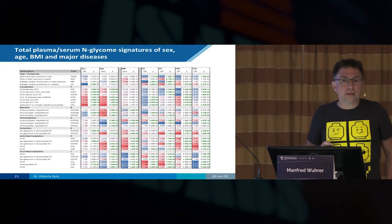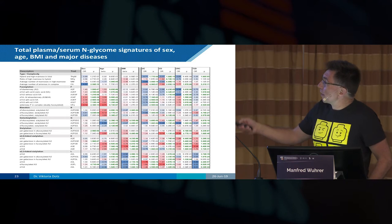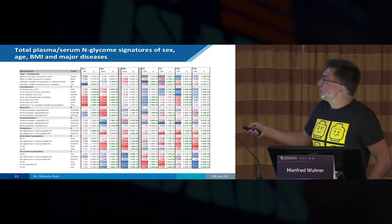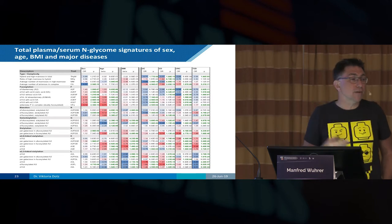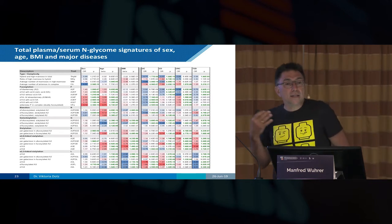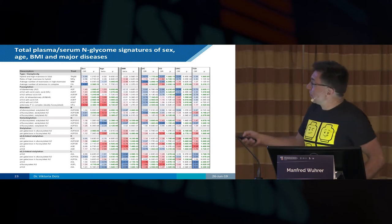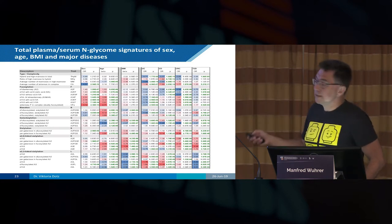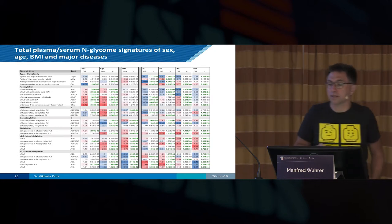Coming back to disease signatures: here we have signatures for different glycan traits, where red means up in disease and blue means down. BMI, age, and sex also have a massive influence on glycomic signatures. That's one reason it makes sense to follow one person longitudinally — you have skewing of the profile due to age, sex, and disease, but on top of that you may develop a UC or CD signature. This is how we envision longitudinal analysis could be used in patients.